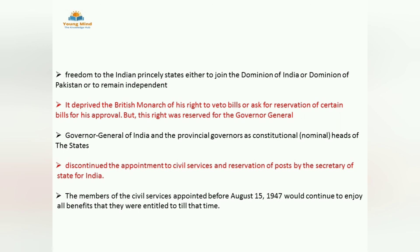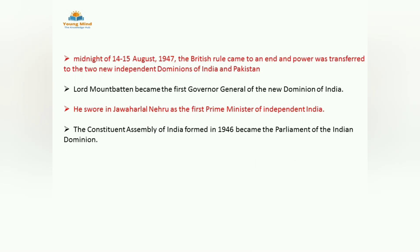Civil servants appointed before August 15, 1947 would be continued and would get all the benefits as before. In the midnight of August 14-15, 1947, British rule came to an end and power was transferred to the new independent Dominions of India and Pakistan. Lord Mountbatten became the first Governor General of new independent India, Jawaharlal Nehru was the first PM of independent India, and the Constituent Assembly of India formed in 1946 became the Parliament of India.